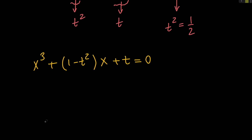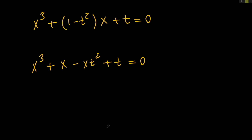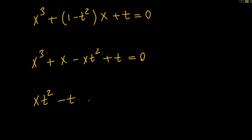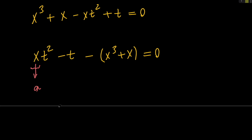So let's go ahead and rewrite this. We have x cubed plus x minus x times t squared plus t equals 0. Next, let's go ahead and negate both sides to get x times t squared minus t minus the quantity (x cubed plus x), and the whole thing equals 0. Now by doing all of this, we have a really nice quadratic equation in terms of t. You can see that we have x times t squared minus t minus some other quantity, so the leading coefficient a is x, b is negative 1, and c is the constant term.